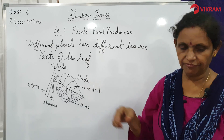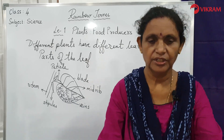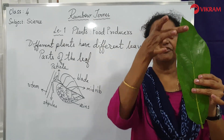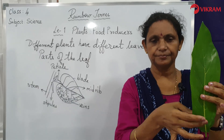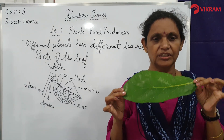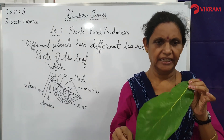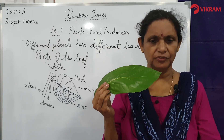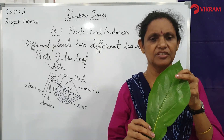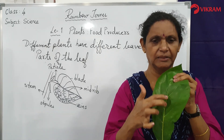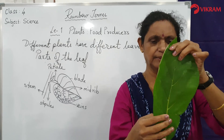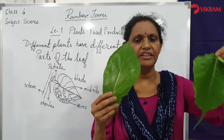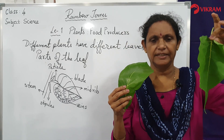The third part is the lamina or the leaf blade. It is very broad — a flat part of the leaf. The food making process occurs in the blade. You can see the different varieties of leaves with the leaf blade.